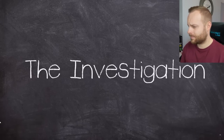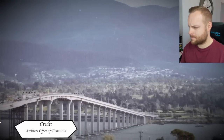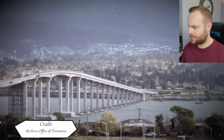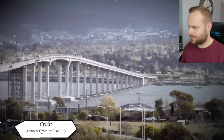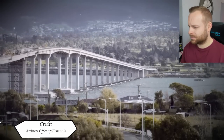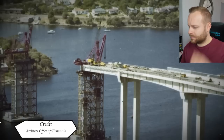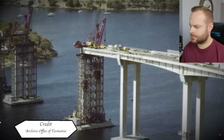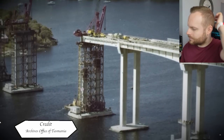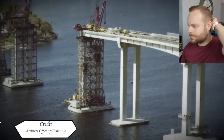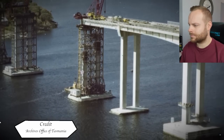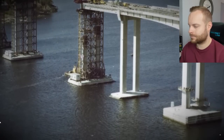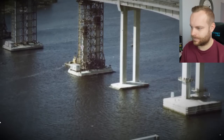Witnesses and survivors were painstakingly questioned and their stories corroborated. Engineers were asked for their opinion on the bridge's design. The piers either side of the main shipping channel had been designed to withstand a blow from a 20,000-ton ship travelling at nine knots, but no other pier on the bridge had been strengthened to withstand a blow from a passing ship.